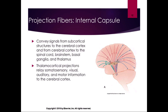When we talk about projection fibers, there is a group known as the internal capsule. When you look at cross-sections of the thalamus, it shows up as white areas. The internal capsule projection fibers convey signals from subcortical structures to the cerebral cortex, and from the cerebral cortex to the spinal cord, brain stem, basal ganglia, and thalamus. Thalamocortical projections relay somatosensory, visual, auditory, and motor information to the cerebral cortex — all that data we use to make decisions and create motor planning.